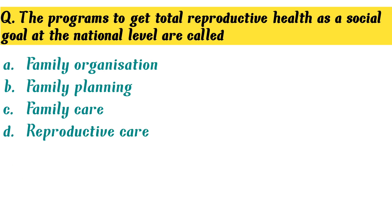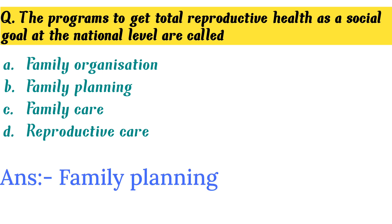The programs to achieve total reproductive health as a social goal at the national level are called — Option B. Family planning is the correct answer.